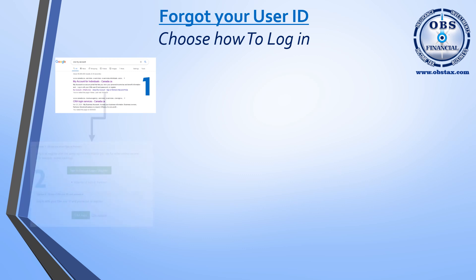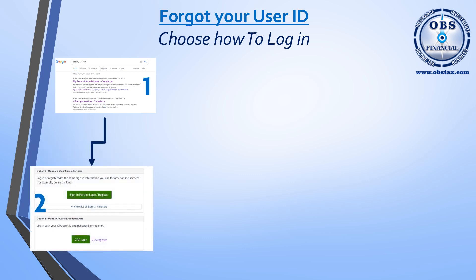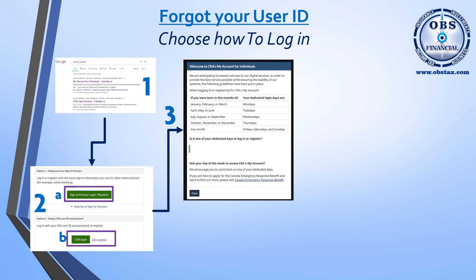Once you get there, you'll have two options. Option A is for sign-in partners, but in this case, because we're looking to find our user IDs and logins, you're going to want to click on Option B, CRA Login. The next screen is a temporary screen set up for the Canadian Emergency Response Benefit, or the CERB. When you get there, you're just going to want to click on CRA Login.